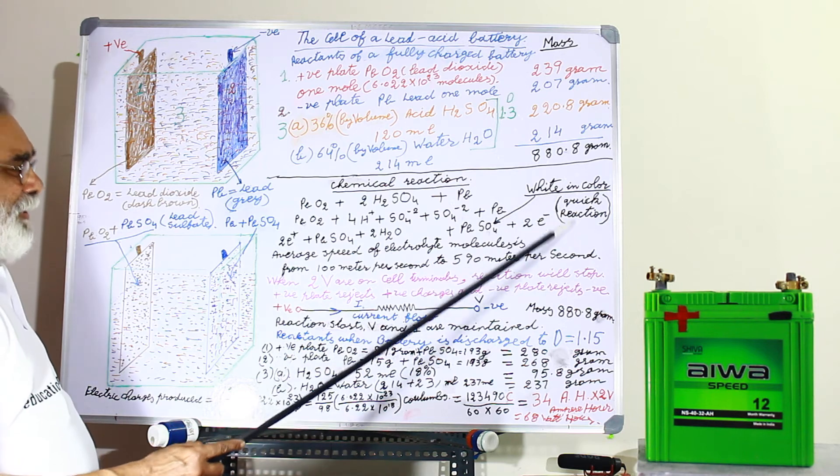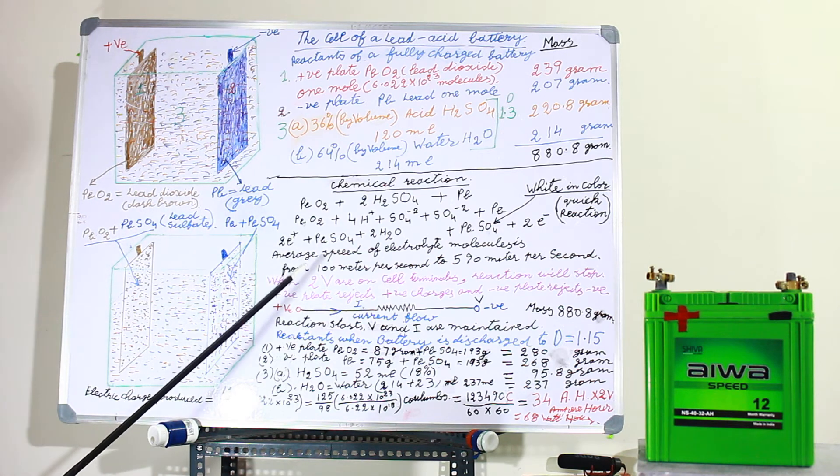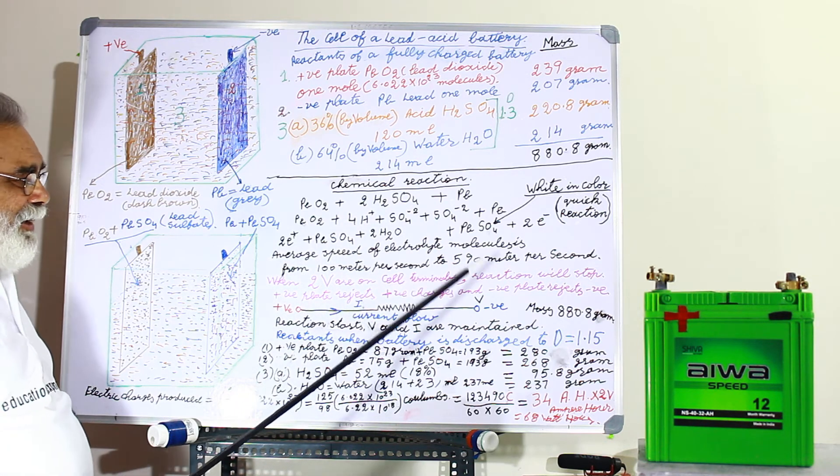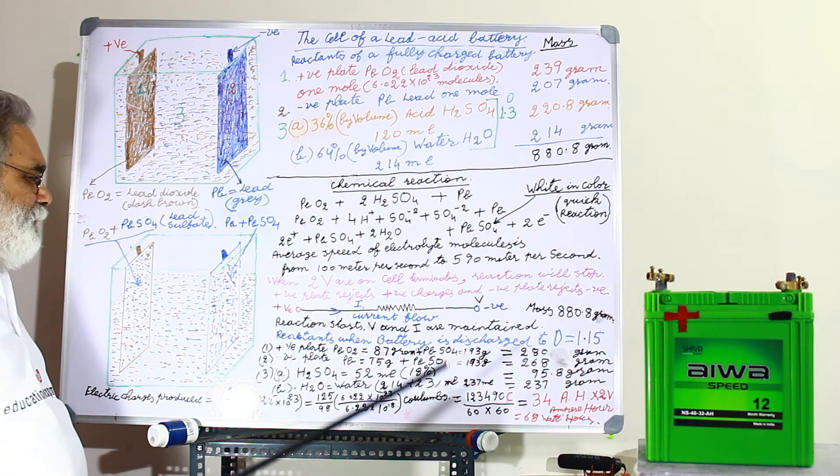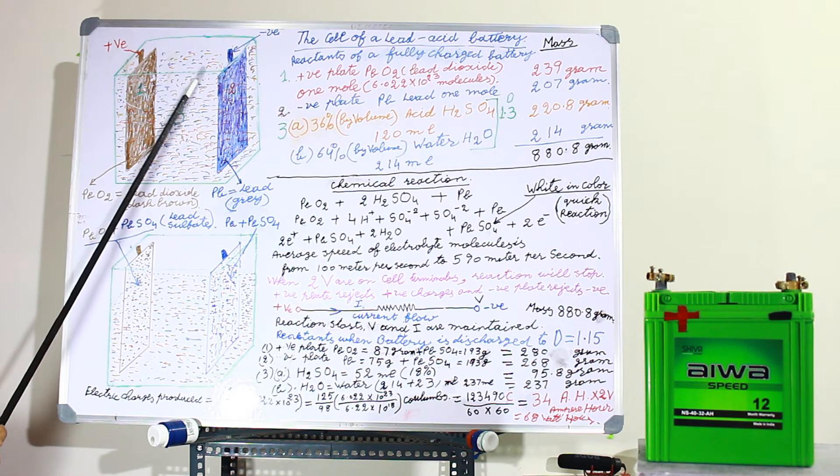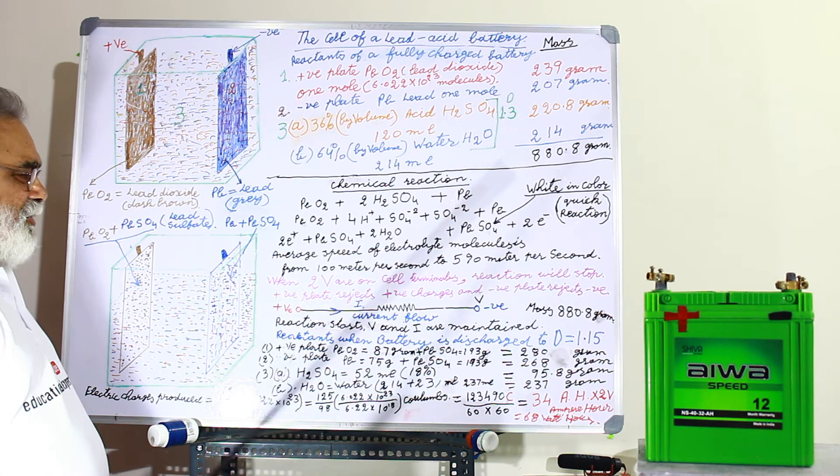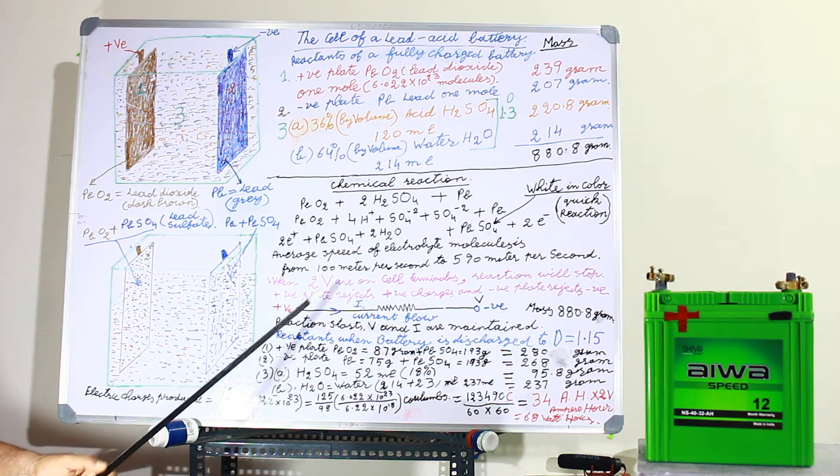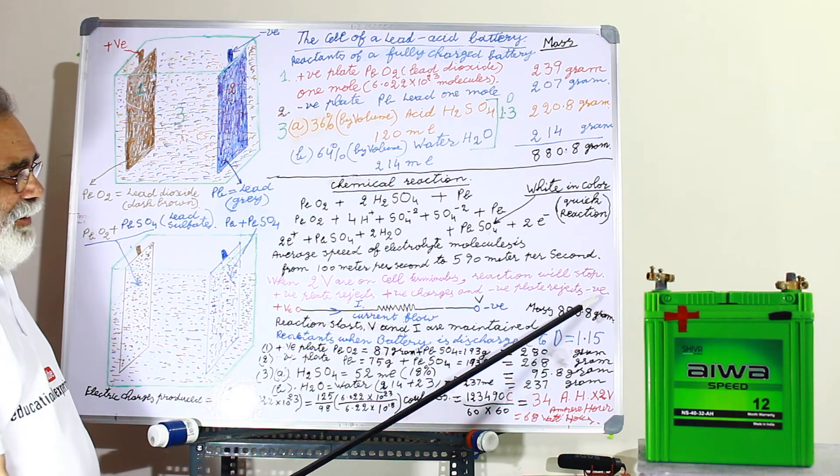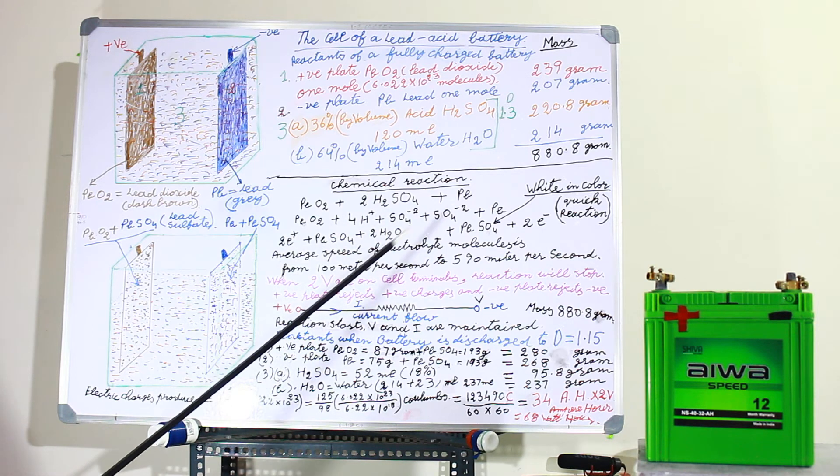And how this action takes place? This action takes place very quickly because average speed of electrolyte molecules here is from 100 meter per second in the heavy molecules to 590 meter per second for the water molecules. So this process goes on. When these plates are at 2 volts around the cell terminals, the reaction will stop because positive plate will reject more positive charges and negative plate will reject the negative charges. Chemical reaction will stop.